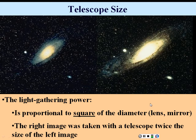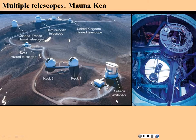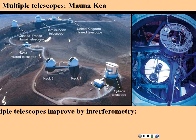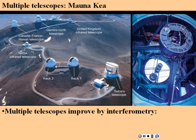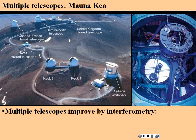What also goes up is your resolution. Here are multiple telescopes on Mauna Kea, on that extinct volcano in Hawaii. It is above the clouds, so it doesn't have to worry about that part of the Earth's atmosphere. These multiple telescopes on Mauna Kea can improve their resolution by interferometry, which we'll talk about in a moment.